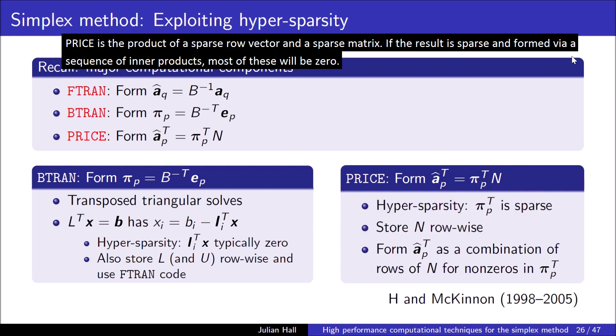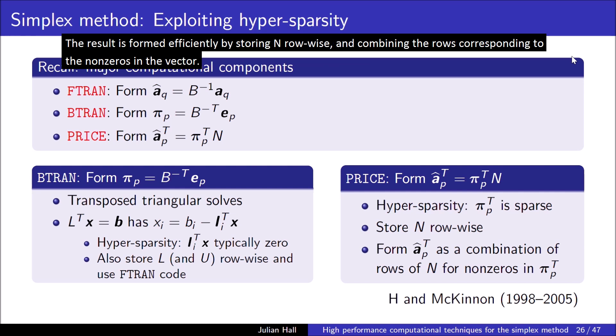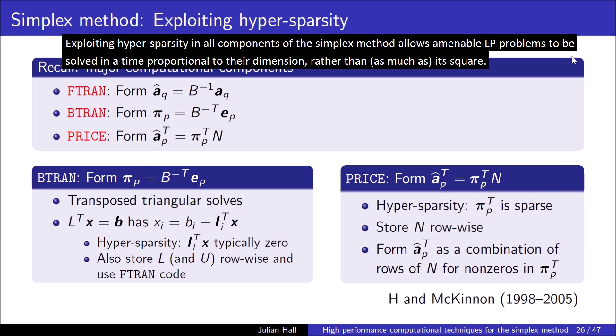Price is the product of a sparse row vector and a sparse matrix. If the result is sparse and formed via a sequence of inner products, most of these will be 0. The result is formed efficiently by storing n row-wise and combining the rows corresponding to the non-zeros in the vector. Exploiting hypersparsity in all components of the simplex method allows amenable LP problems to be solved in a time proportional to their dimension, rather than as much as its square.